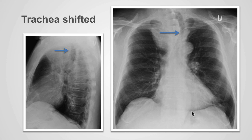The trachea can be displaced by pathology involving the mediastinum or the hila. In this example, there is an anterior mediastinal mass that is displacing the trachea to the left and is narrowing the caliber of the trachea. The trachea is also displaced posteriorly, and this posterior displacement is best seen on the lateral x-ray.